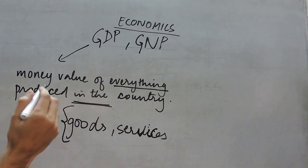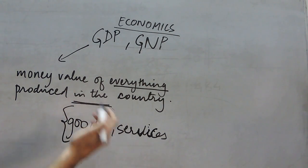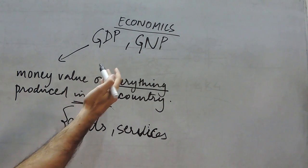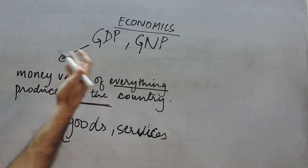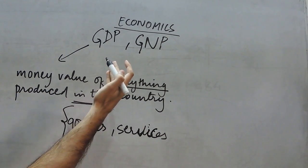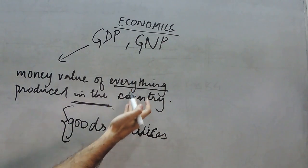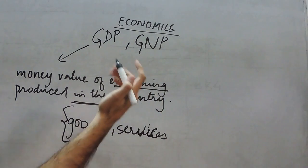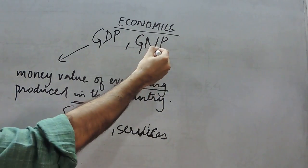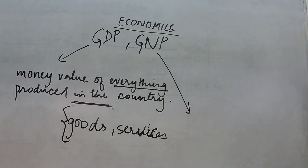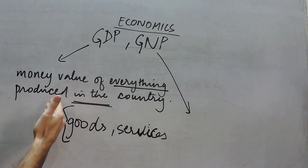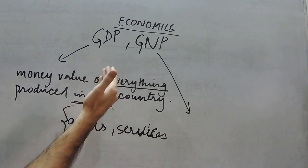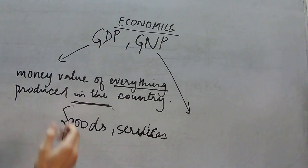So with the GDP of India we mean the money value of all the goods and services that have been produced inside the territorial area of India. Gross national product, on the other hand, is the money value of everything produced by the nationals of a country.